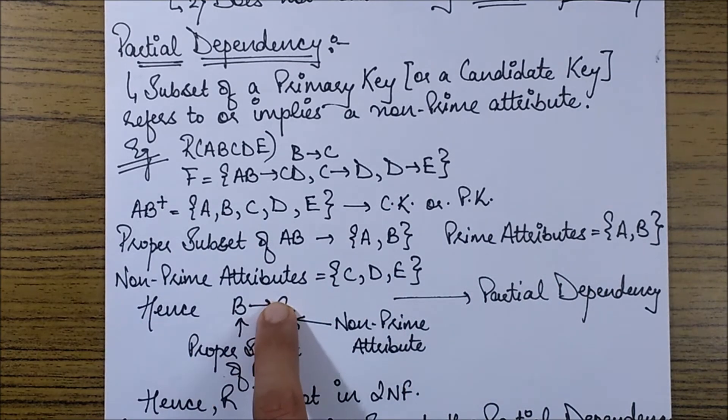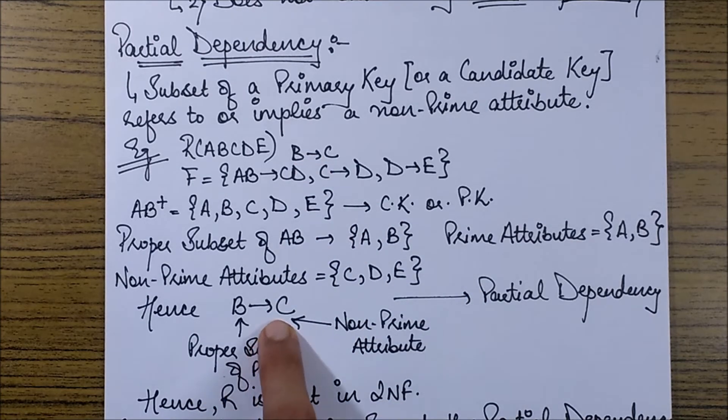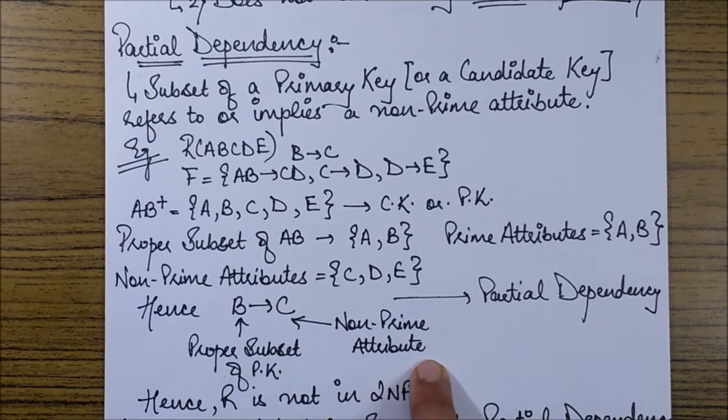And the non-prime attributes are all the remaining attributes. So they are C, D and E. Now clearly if we see this B to C dependency the left hand side is a proper subset of this primary key and the right hand side is a non-prime attribute. Hence this is a partial dependency.